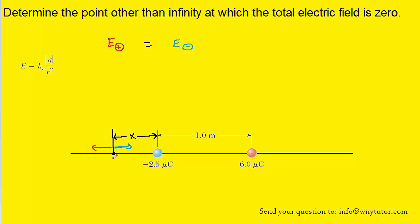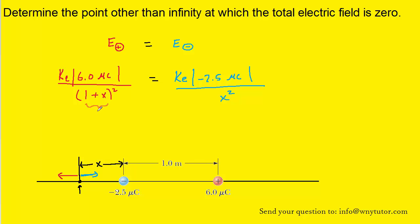Now that we know the formula, we can plug in for both the positive and negative electric fields. The r value for the positive charge is labeled 1 + x — because the distance from the positive charge to the negative charge is 1 meter, and we add an additional increment x to reach the zero-field point — giving a total distance of 1 + x.